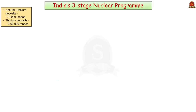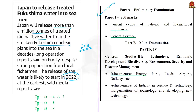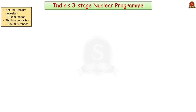The syllabus relevant for this analysis is highlighted for your reference. India has a three-stage nuclear program. In the 1950s, Dr. Homi Bhabha gave India a roadmap for the development of nuclear energy. India has less uranium reserves but huge thorium reserves — almost a quarter of the world's thorium reserves are found in India. In order to utilize these thorium reserves, India came up with a three-stage nuclear program.